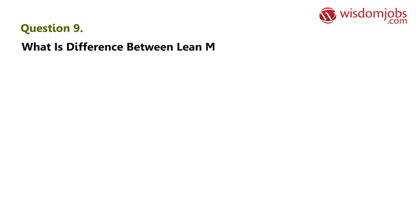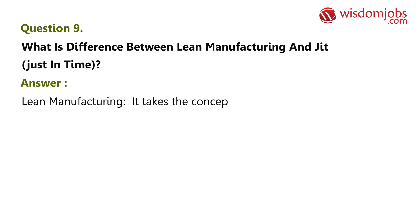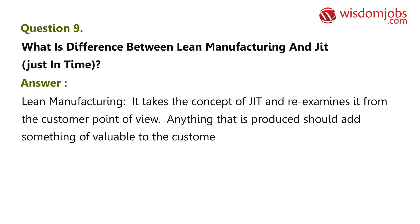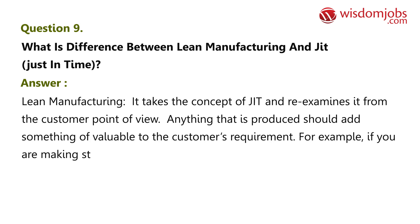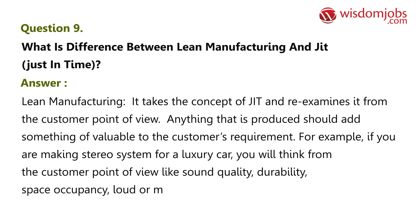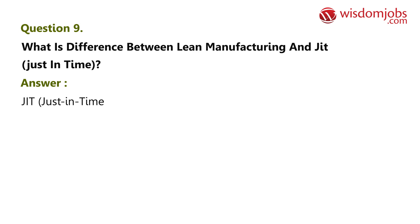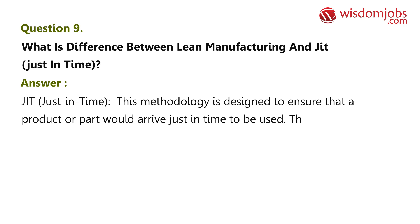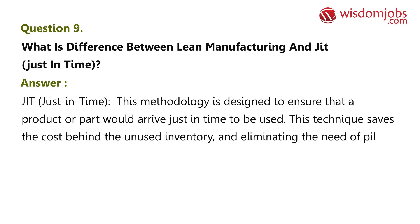Question 9: What is the difference between lean manufacturing and JIT (Just In Time)? Lean manufacturing takes the concept of JIT and re-examines it from the customer's point of view — anything produced should add something of value to the customer's requirement. For example, if you are making a stereo system for a luxury car, you think about sound quality, durability, space occupancy, and volume. Just In Time is a methodology designed to ensure that a product or part arrives just in time to be used, saving the cost behind unused inventory and eliminating the need to pile up inventory.